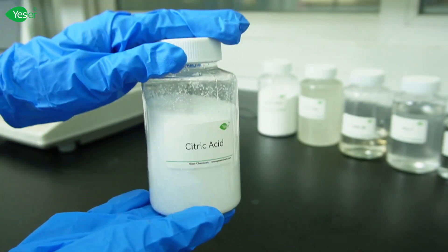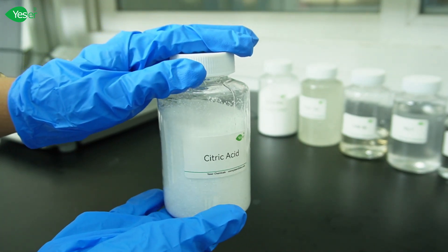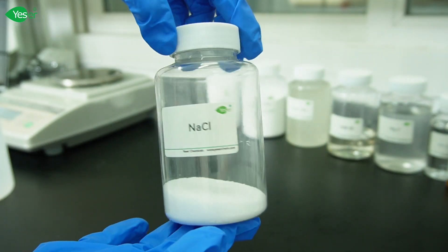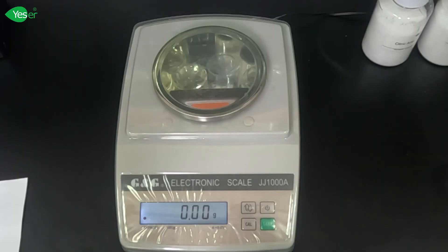Citric acid will be used to ensure our shampoo is balanced for scalp health. Lastly, our thickener, which is salt or sodium chloride. Let's move on to our formulation process, designed to be straightforward yet precise for consistent quality.